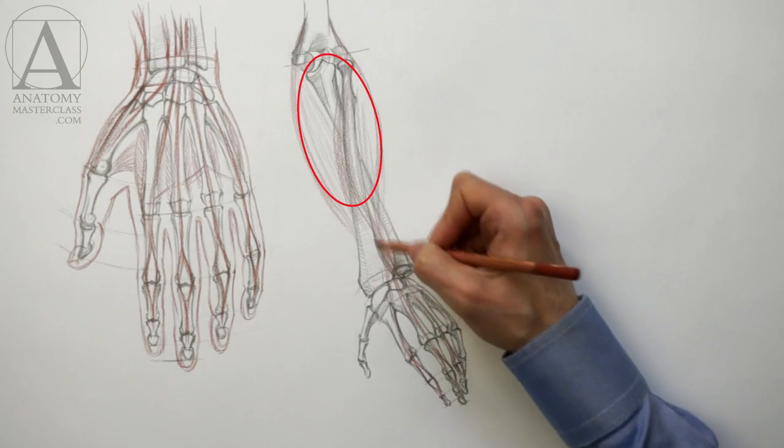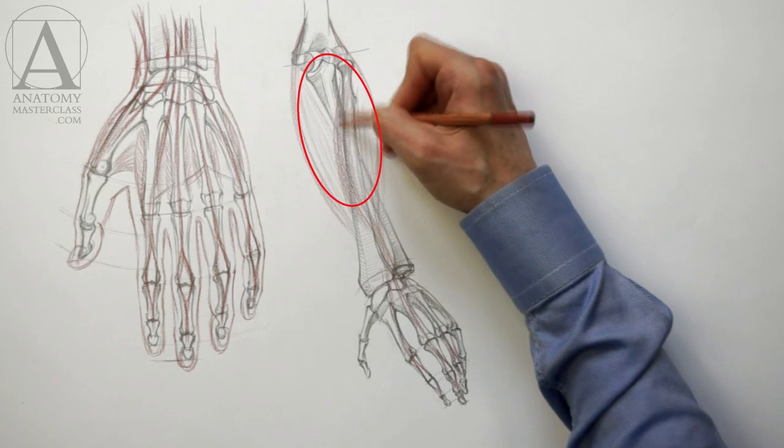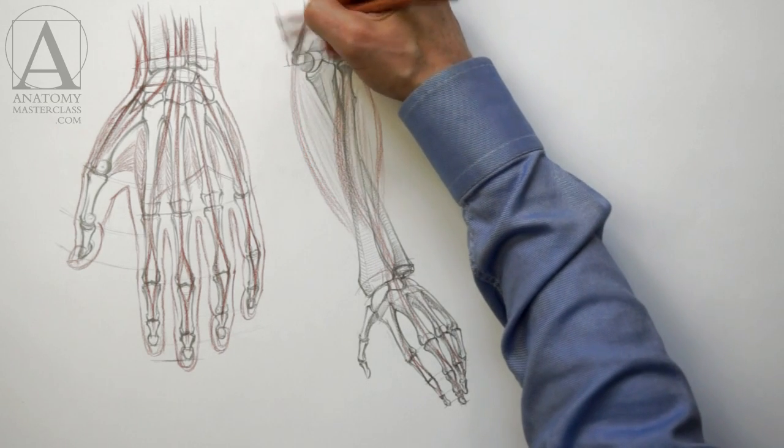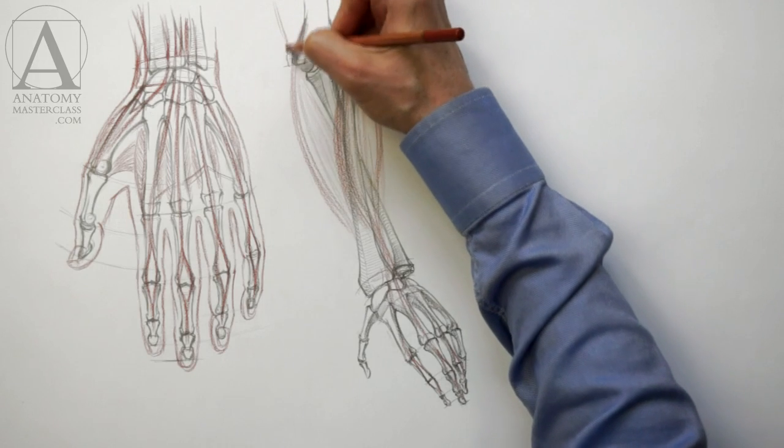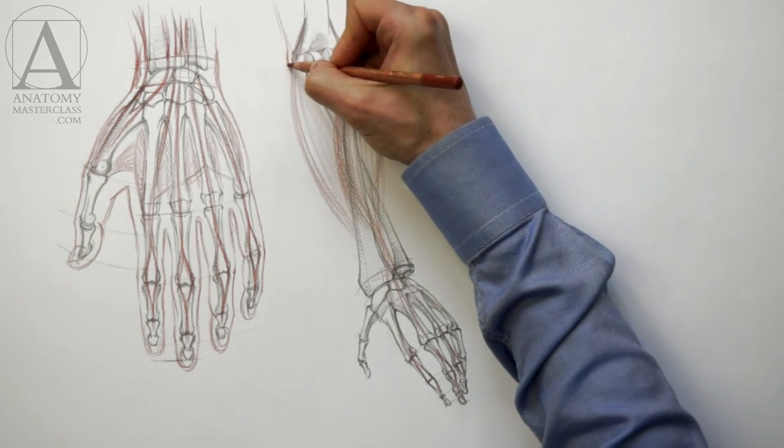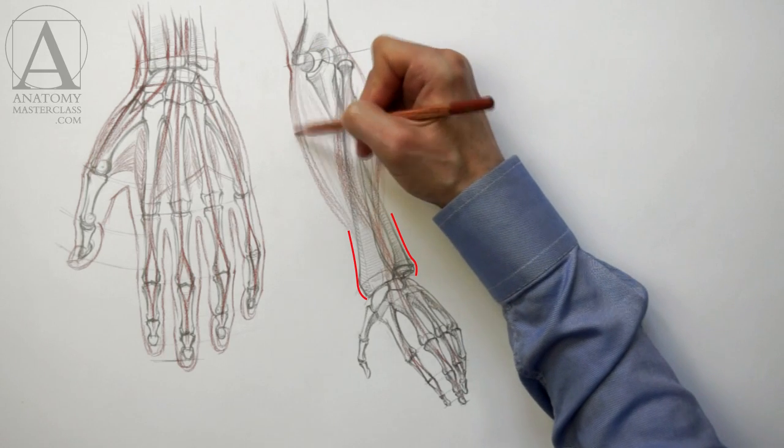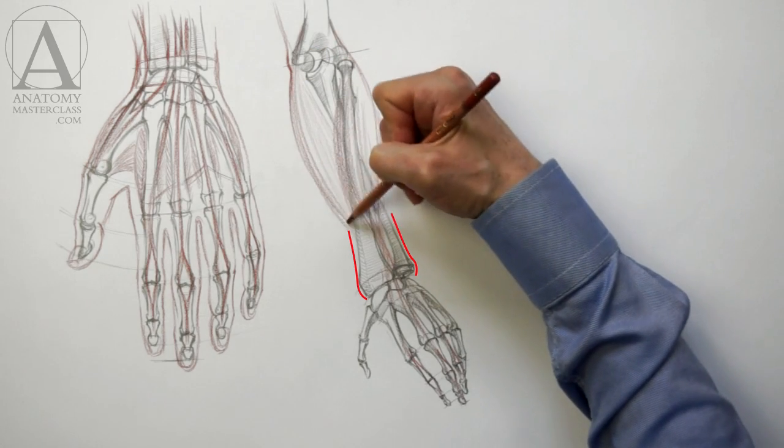You can see that the main mass of these two groups of muscles is located in the upper half of the lower arm. At the lower half of the forearm, these muscles become tendons. That is why the width of the arm near the wrist is defined by the width of two bones, the ulna and the radius.